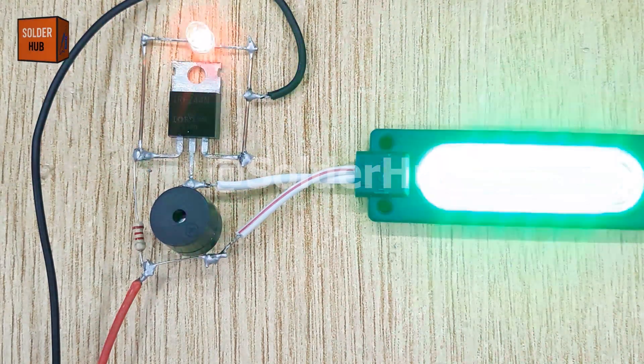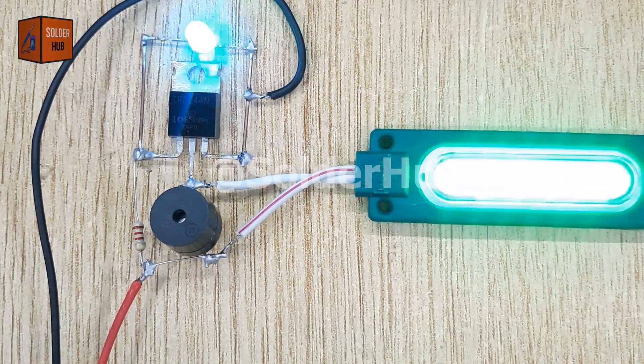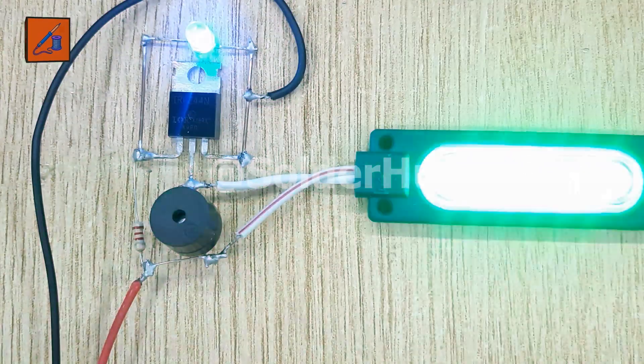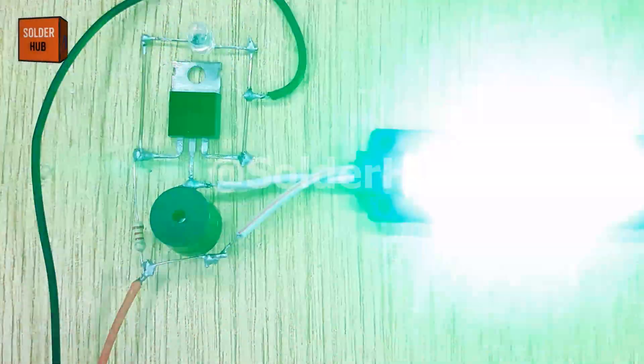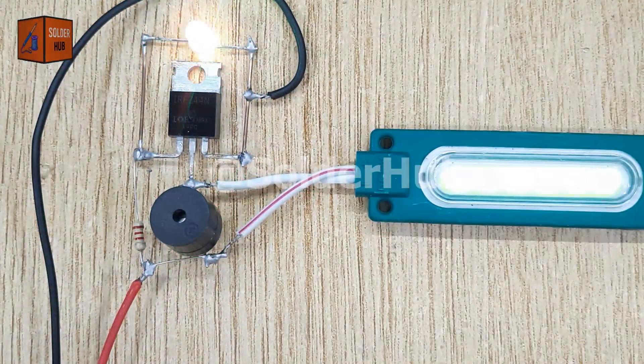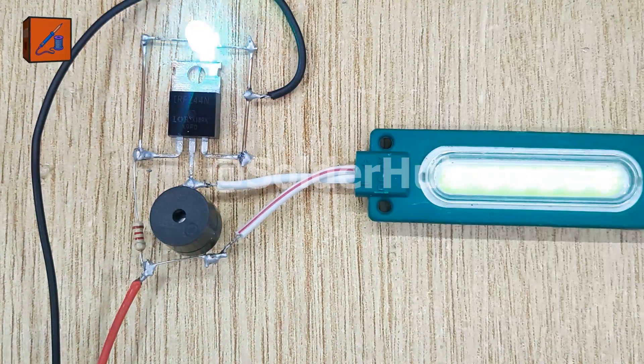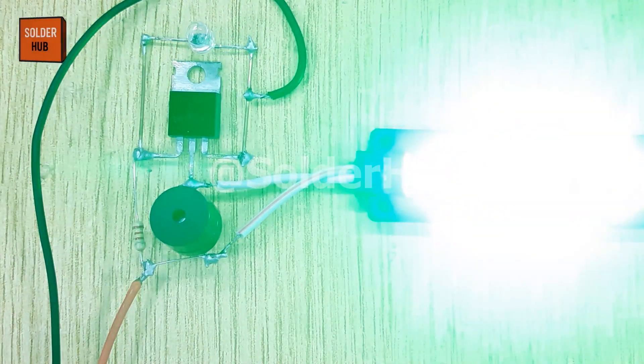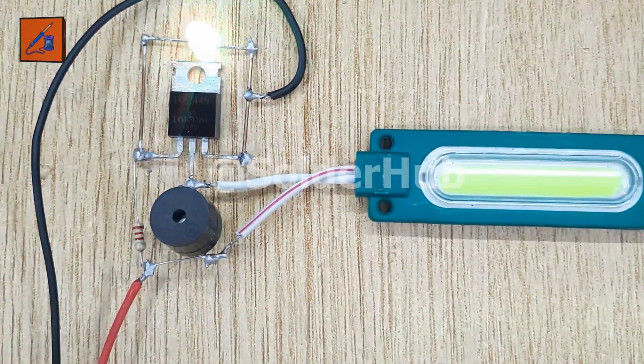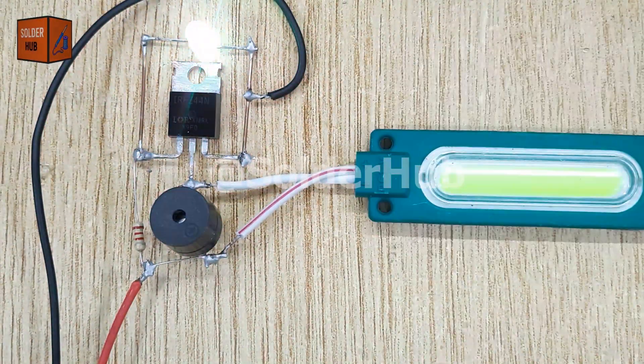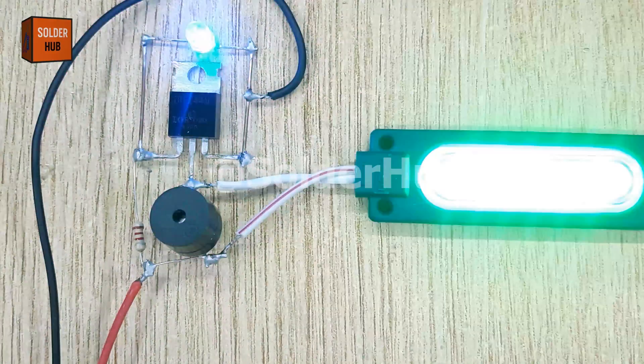Today I'm going to build something really exciting, a bike strobe light with a siren using a powerful IRFZ44N MOSFET. Imagine riding your bicycle at night and having a strobe light flashing along with a siren sound. It's not only cool, but also adds safety and visibility. Let's carefully create this step by step.